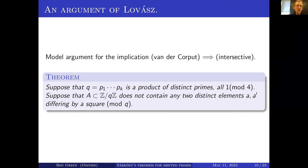Suppose that A ⊂ ℤ/Qℤ doesn't have two elements a and a' differing by a square mod Q. Then the conclusion is that |A| ≤ √Q. This is a very good bound, but it's for a weaker problem, because being a square mod Q is a lot easier than being a genuine square. When Q is prime, half the residues mod Q are squares.